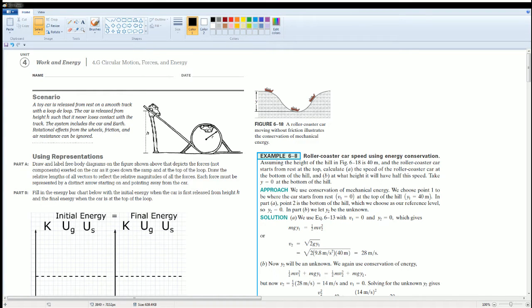Welcome to the AP Physics Workbook Solution. Here we have unit 4, work and energy. The section is 4G, circular motion, force, and energy.